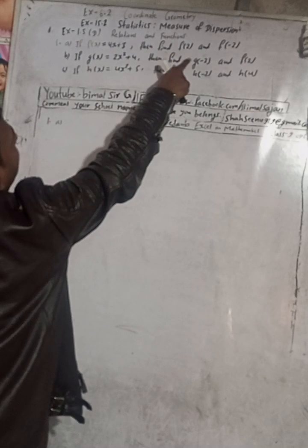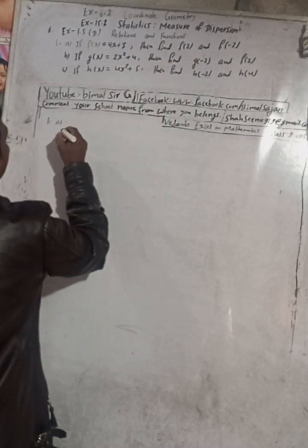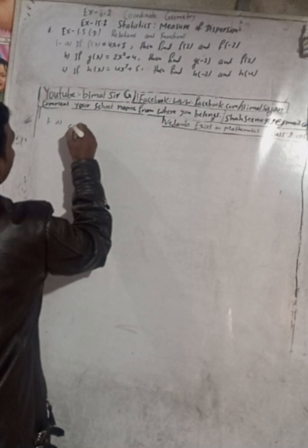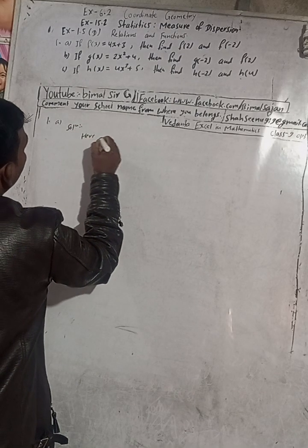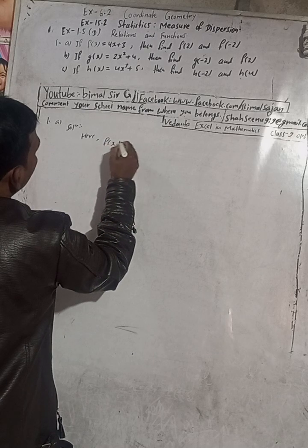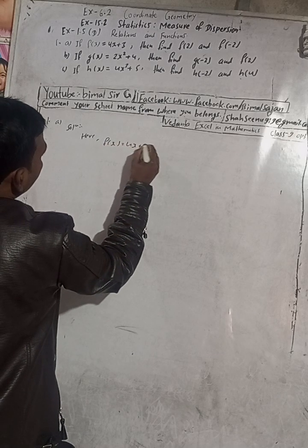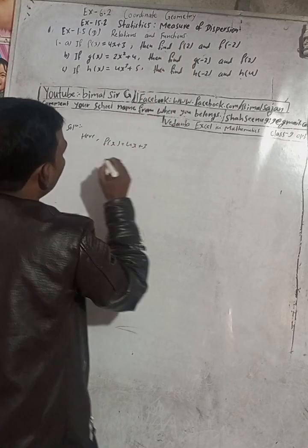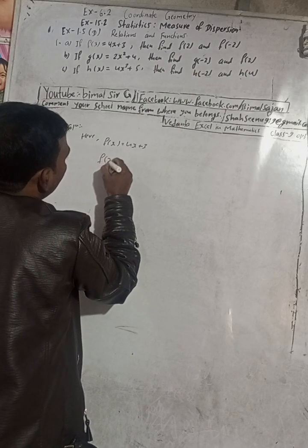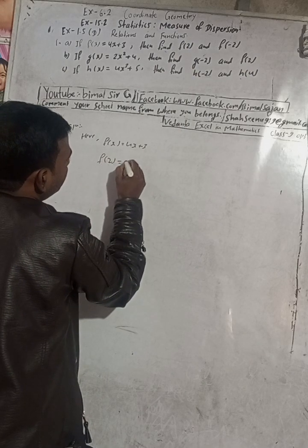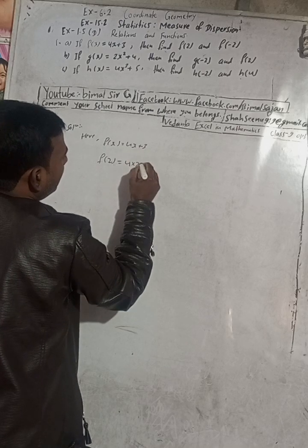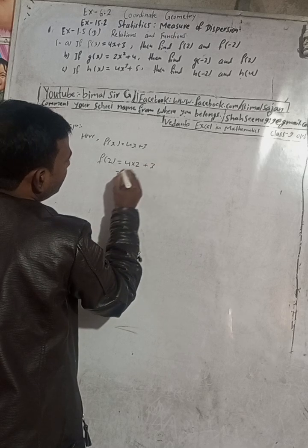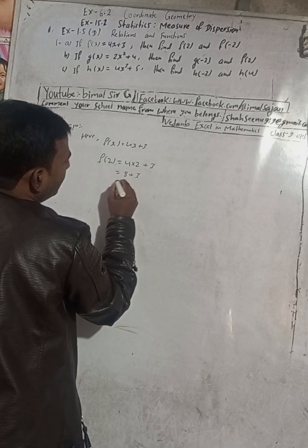If f(x) is equal to 4x plus 3, then find f(2) and f(-2). Here is the given solution. f(x) equals 4x plus 3. We have to find f(2), so in place of x we put 2. So this is 4 multiplied by 2, plus 3, which is equal to 8 plus 3.